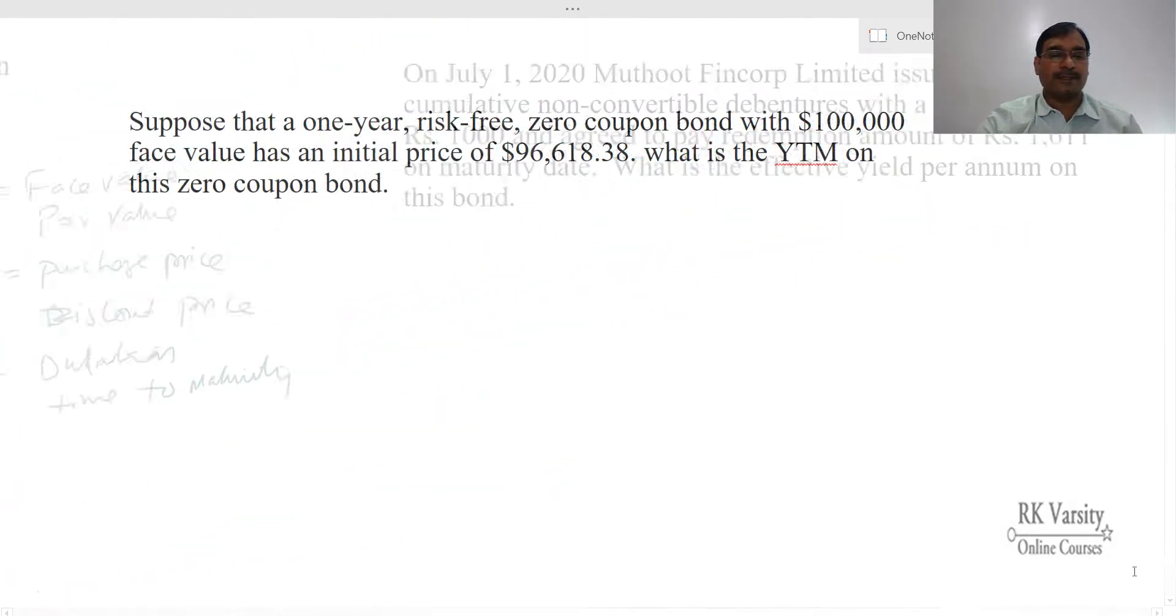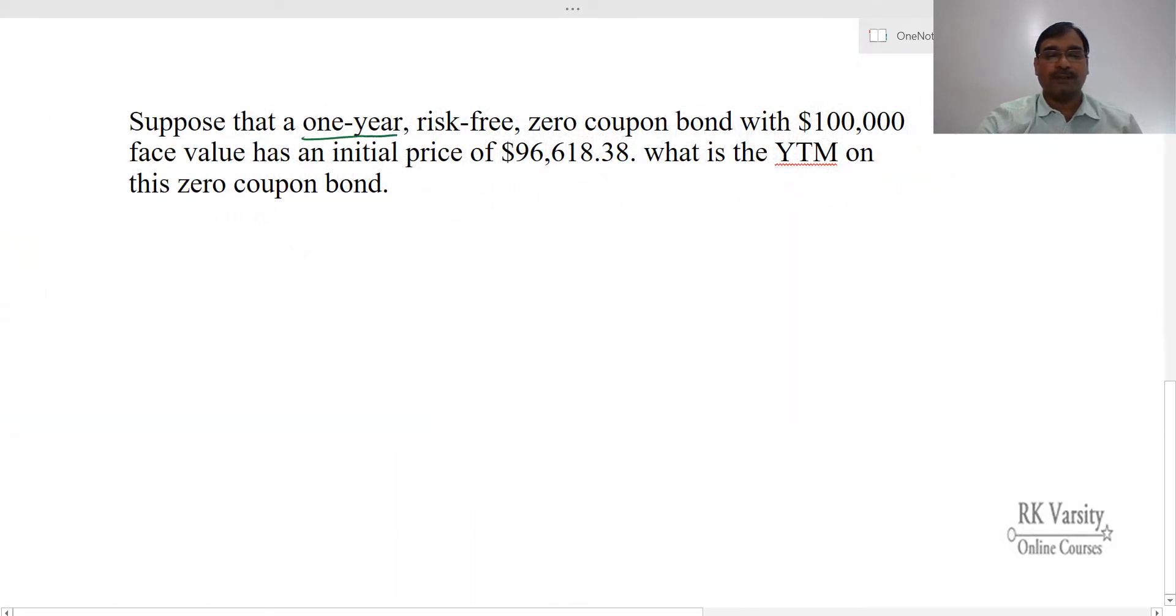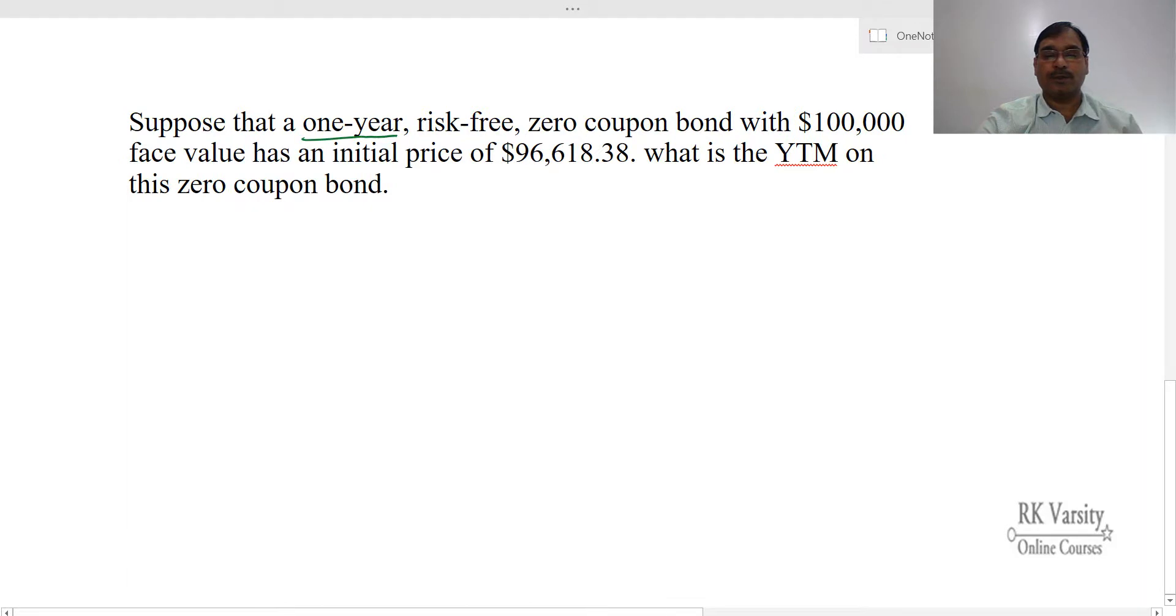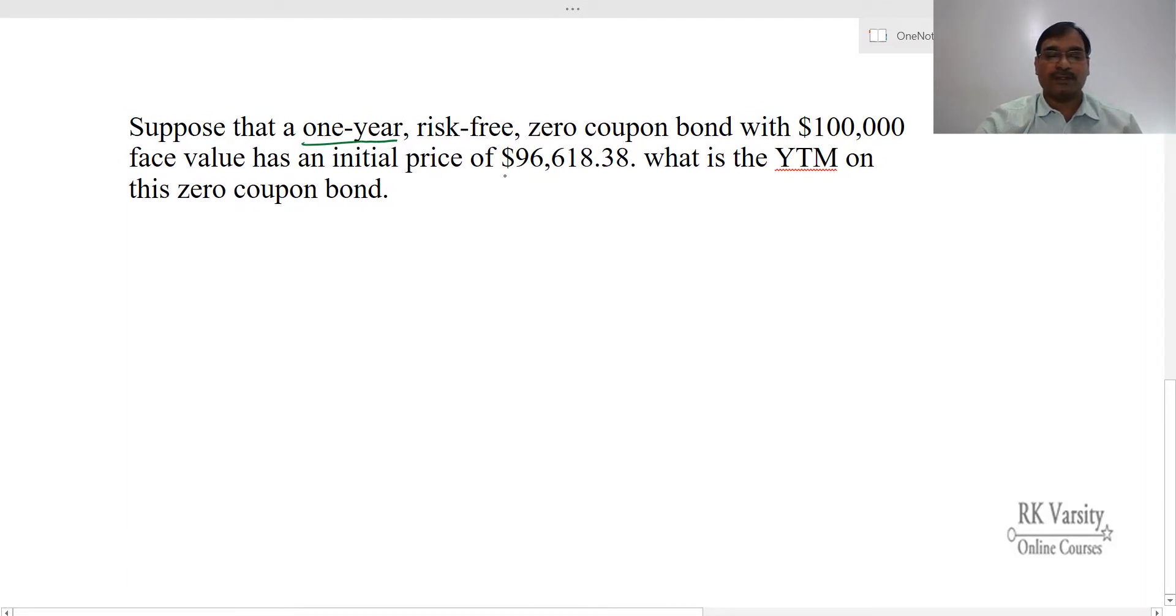Here is the second example. Suppose that a one-year, risk-free zero coupon bond with $100,000 face value has an initial price of $96,618.38. What is the YTM on this zero coupon bond? To get the yield to maturity, this equals face value upon initial price, raised to the power of 1 upon N, minus 1.